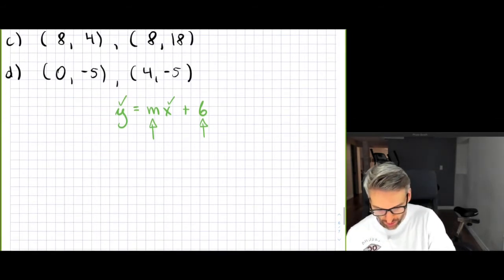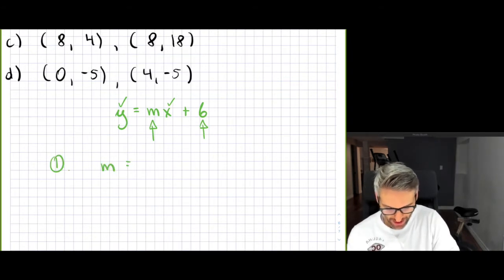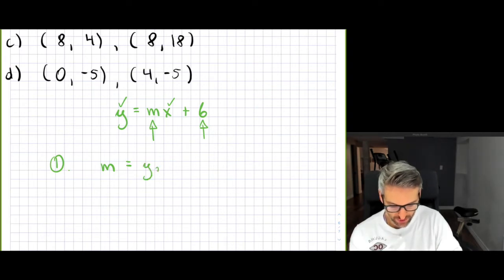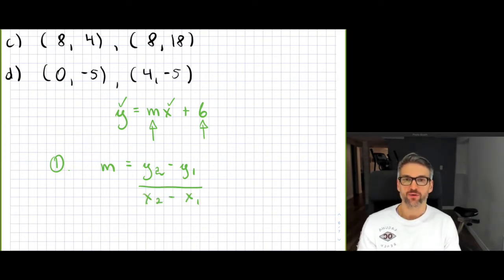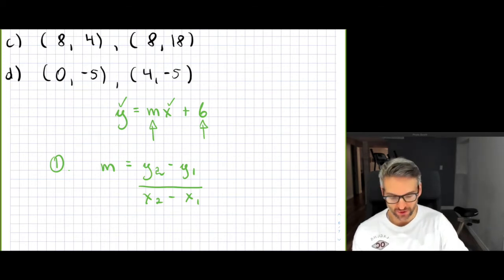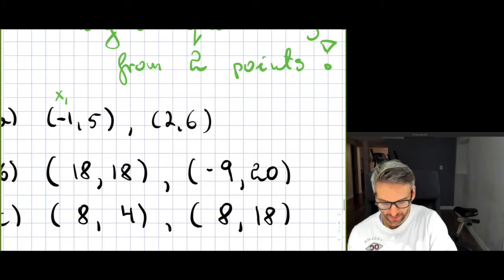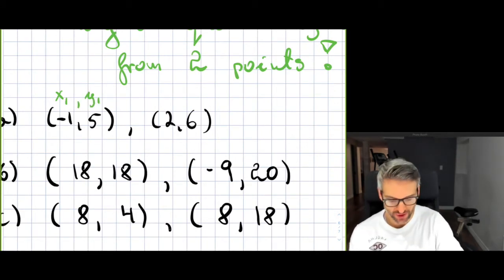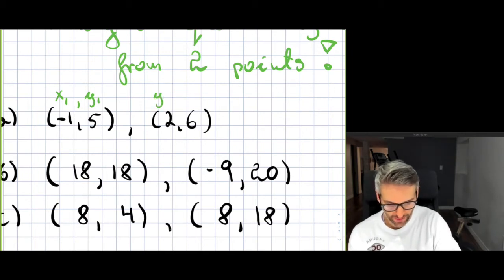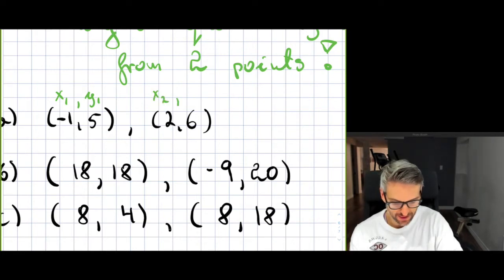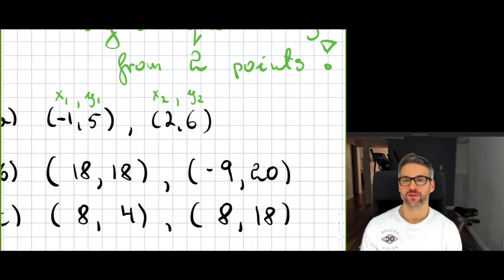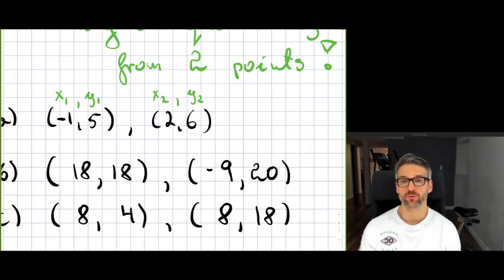In order to find the slope, recall that the slope m is equal to y2 minus y1 over x2 minus x1. For this example, the first point gives us x1 and y1, and the second point gives us x2 and y2. What you choose as the first point or second point doesn't matter — the slope will be equal either way. But once you make the choice, please be consistent.